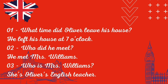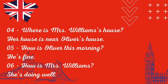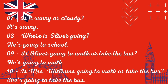One: What time did Oliver leave his house? He left his house at seven o'clock. Two: Who did he meet? He met Mrs. Williams. Three: Who is Mrs. Williams? She's Oliver's English teacher. Four: Where is Mrs. Williams' house? Her house is near Oliver's house. Five: How is Oliver this morning? He's fine. Six: How is Mrs. Williams? She's doing well. Seven: Is it sunny or cloudy? It's sunny. Eight: Where is Oliver going? He's going to school. Nine: Is Oliver going to walk or take the bus? He's going to walk. Ten: Is Mrs. Williams going to walk or take the bus? She's going to take the bus.